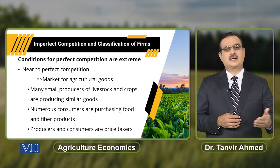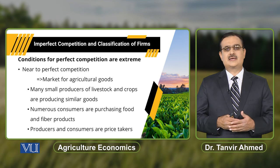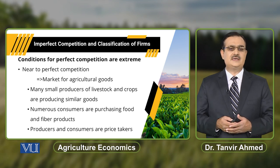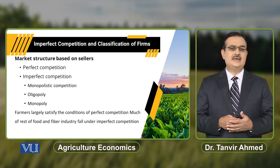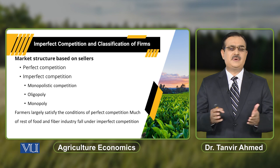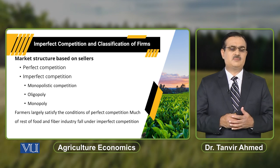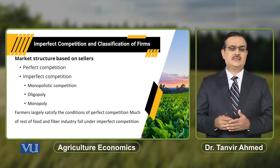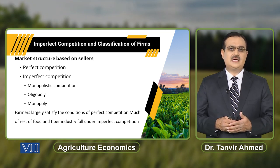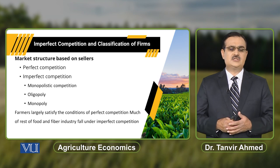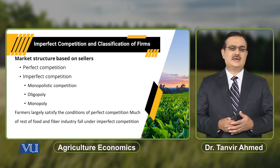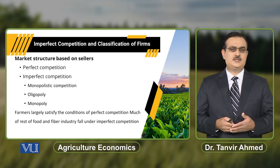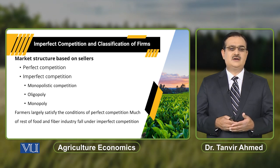If a particular producer enters or leaves the market, there is no effect on the market output price. When we talk about market categorization, this is basically about the categorization of market structure based on sellers — assuming there are a large number of buyers. On the basis of the number of sellers, we say the seller is operating under perfectly competitive market or under imperfect competition. Under imperfect competition, we categorize into three types: monopolistic competition, oligopoly, and monopoly.